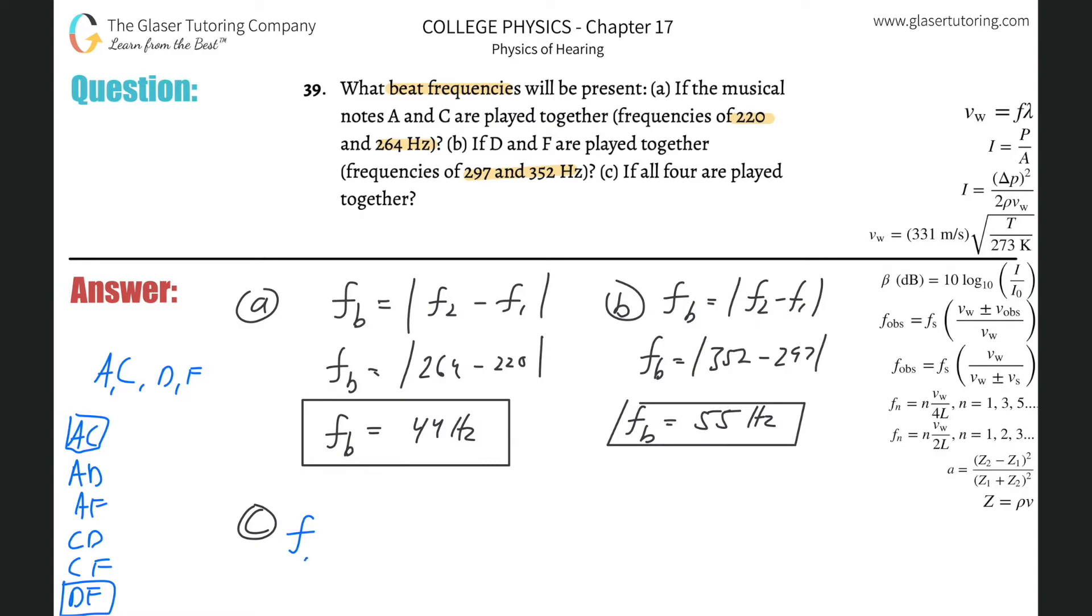The beat frequency between A and D: simply subtract them. A was 220, D was 297, so 297 minus 220 is 77 Hz.